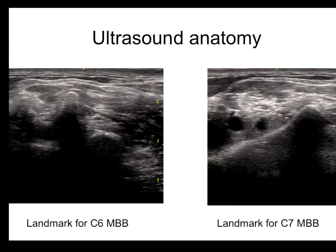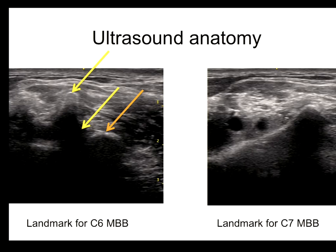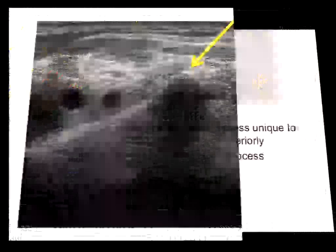This is the typical ultrasound anatomy of C6 and C7. At C6 you can see the typical shape of anterior and posterior tubercle with a gap behind the posterior tubercle, and you can see the last prominence of the articular pillar posterior to the posterior tubercle — that is the target for the C6 medial branch block. When scanning the C7 transverse process, you cannot see any anterior tubercle, only the transverse process. The upper edge of the transverse process is the target for the C7 medial branch block.